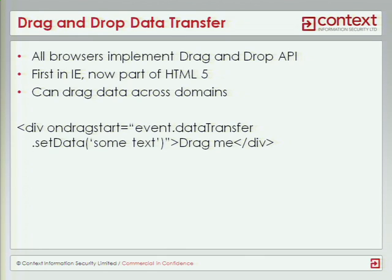The thing with drag and drop is it doesn't have the same-origin policy that prevents JavaScript on one site from accessing content on another site. So the user can actually drag data from one site to another, and because user interaction is required, browsers don't prevent this. Here's some code showing how we use the drag and drop API: when I start to drag this element, I associate data with it — some text — and when it's dropped, that text will be entered into a text field or onto the site.